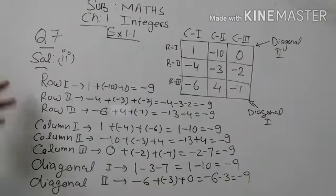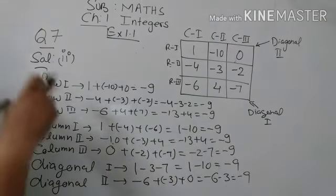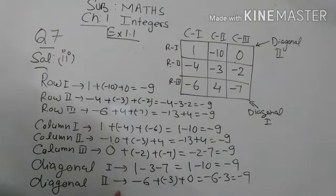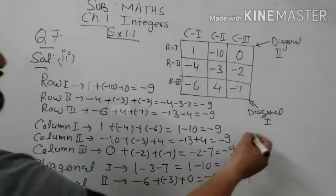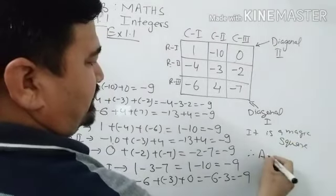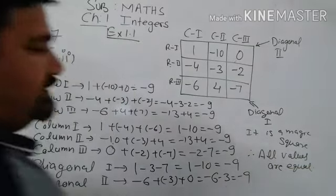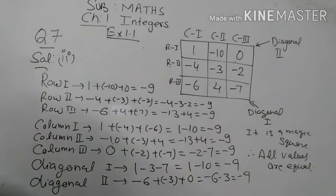Checking all values — row 1, row 2, row 3, column 1, column 2, column 3, diagonal one and diagonal two — all values are minus 9, and all are equal. So this square is a magic square. It is a magic square because all values are equal in each row, column, and diagonal. I hope you understand these two parts of question number 7.